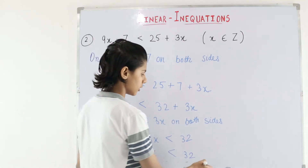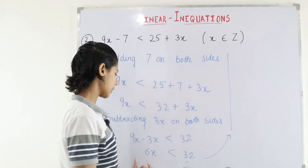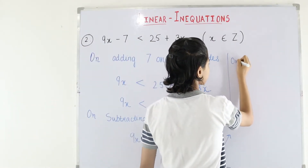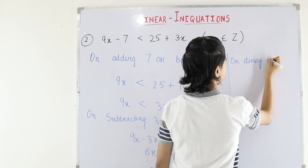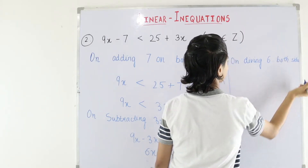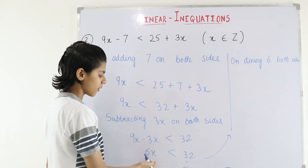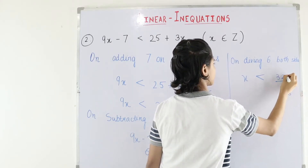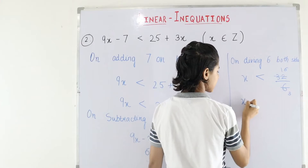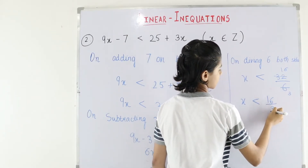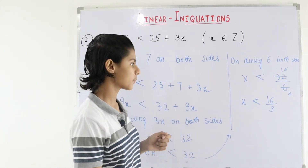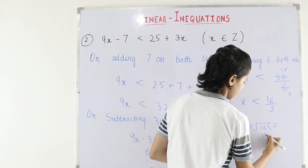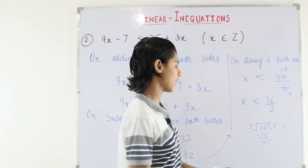Now we write: on dividing 6 on both sides, because x is in multiplication with 6. On the left side, 6 cancels to give x. On the right side, 32 divided by 6 — we simplify: 32 divided by 6 gives 16 by 3. Since 16 and 3 don't cancel, we divide to get a decimal: 16 divided by 3 is approximately 5.3.